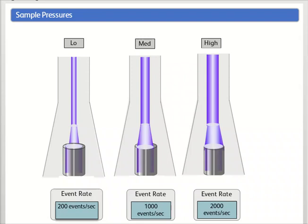When the sample pressure is low, the sample stream is narrow, and the event rate is low. When you increase the sample pressure, the sample stream widens and the event rate increases.